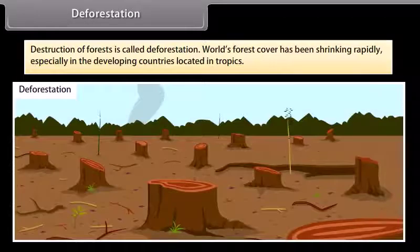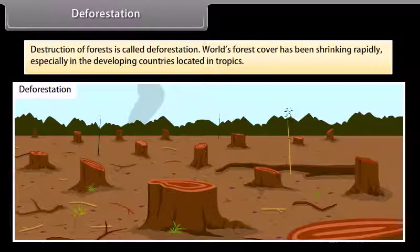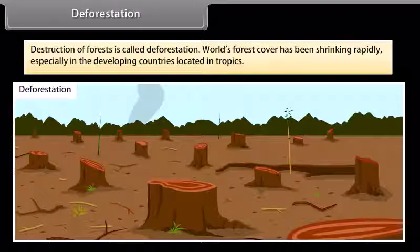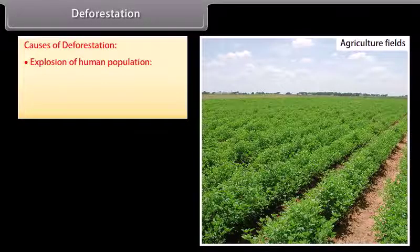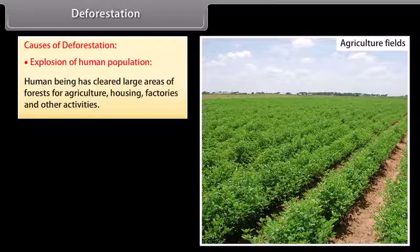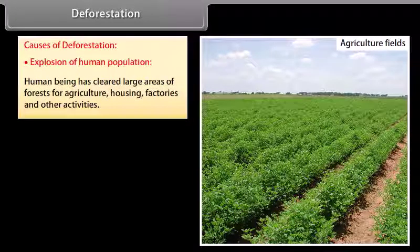Destruction of forests is called deforestation. World's forest cover has been shrinking rapidly, especially in the developing countries located in the tropics. Causes of deforestation include: explosion of human population — human beings have cleared large areas of forests for agriculture, housing, factories, and other activities.